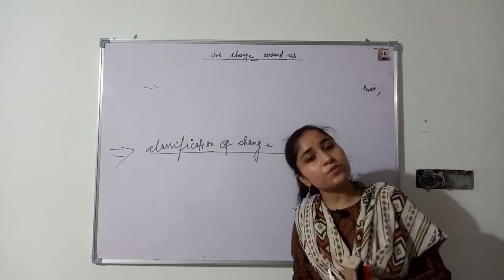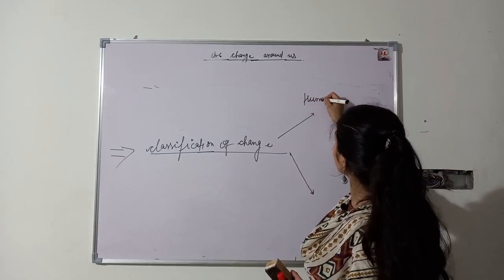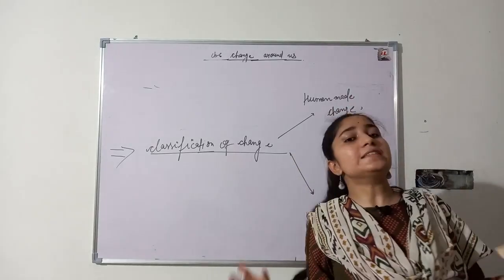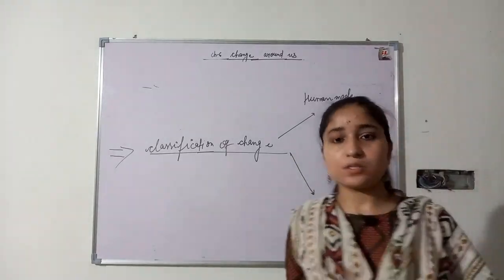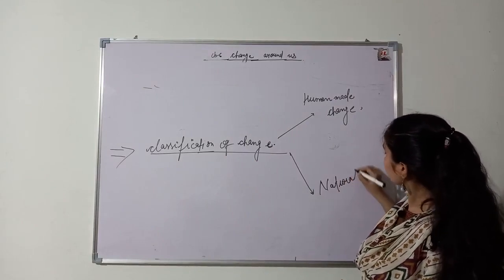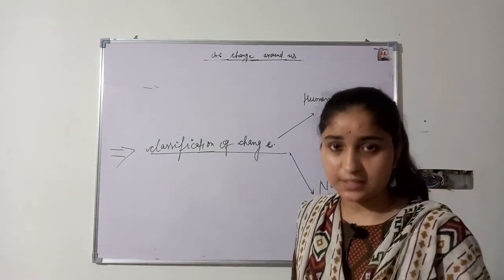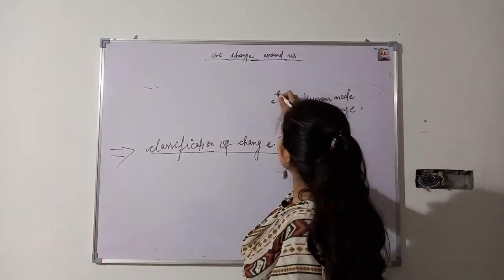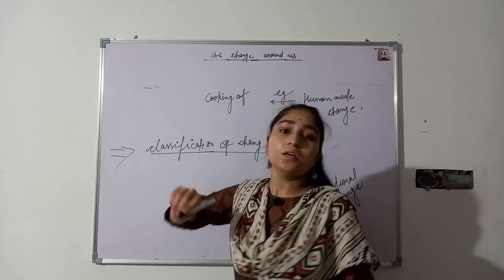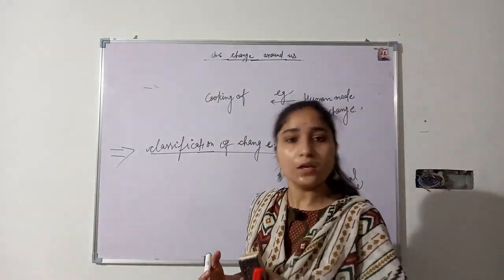The first classification of change is human-made change versus natural change. Human-made change means the change that occurs because of human activities. Natural change means the change that occurs because of natural activities. An example of human-made change is cooking of food, because it occurs due to human activities.